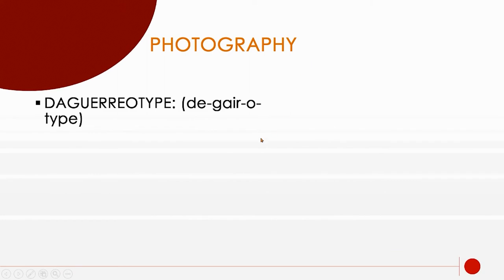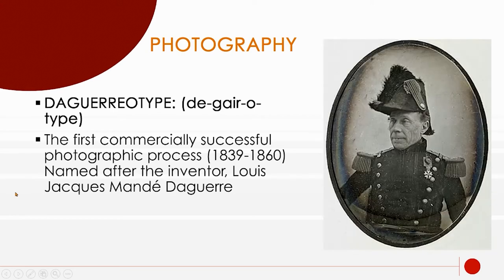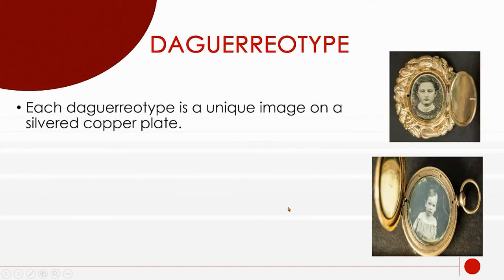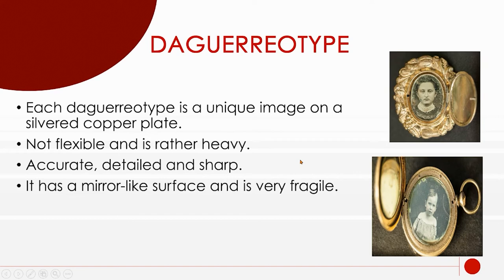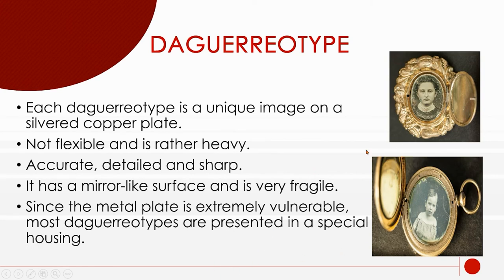The next type of photography was called the daguerreotype — the first commercially photographic process, invented by Jacques Daguerre. Each daguerreotype was unique: just one photo, directly onto a copper plate coated with silver. It was not flexible, pretty heavy, very accurate and detailed. It had a mirror-like surface and was very fragile — you needed to not touch it, which is why most were in frames or pieces of jewelry. The idea of framing a photograph comes from daguerreotypes.